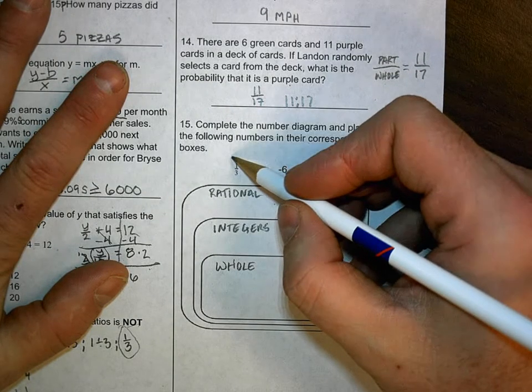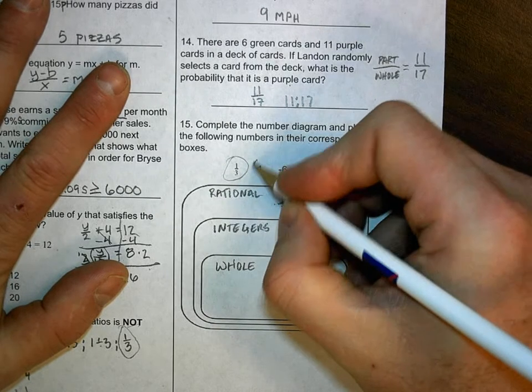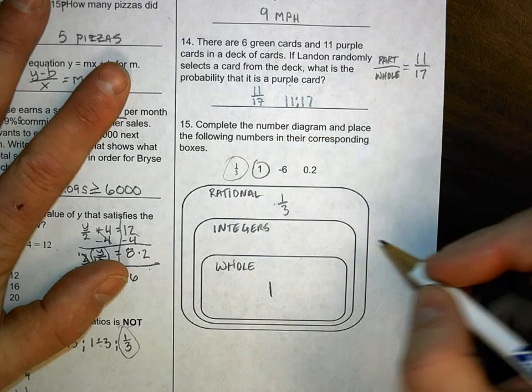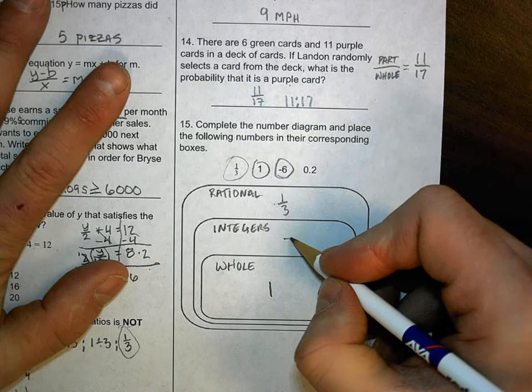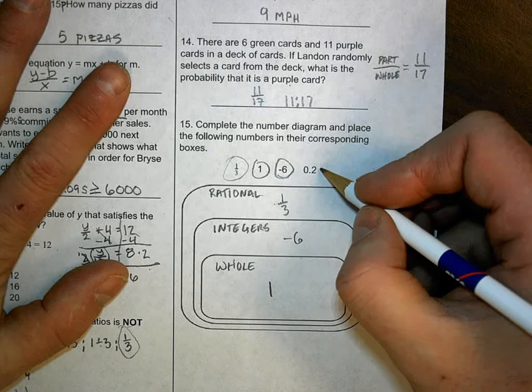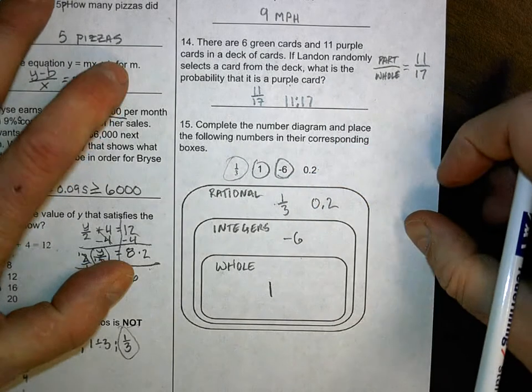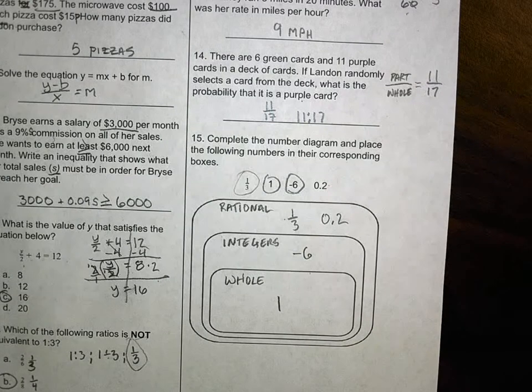So now we've got this label. Let's put it in. We've got 1 third. That's a fraction. We're going to stick it in this zone right here. We've got 1. That's a whole number. We've got negative 6. It's an integer. And we've got 0.2. Again, that's a terminating decimal. So 0.2. So I hope that helped. Please study for the test Monday. Thank you.